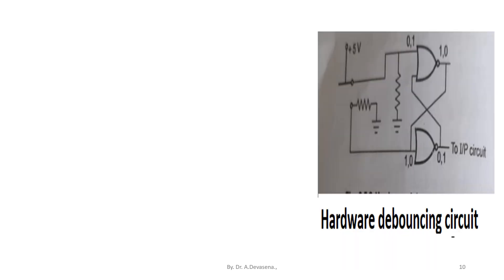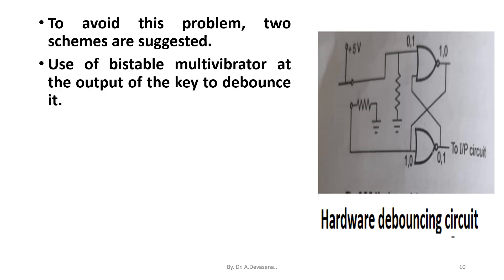To avoid this problem, two schemes are suggested. Use of bistable multivibrator at the output of the key to debounce it. The microprocessor has to wait for the transient period at least for 10 milliseconds so that the transient response settles down and reaches a steady state.